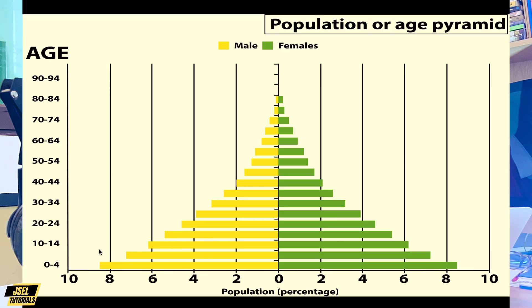If you trace the age group 10–14, there is a bar corresponding to it — the yellow bar represents the male population and the green bar represents the female population. That is how the population pyramid looks, and this is the idea you should have in mind.